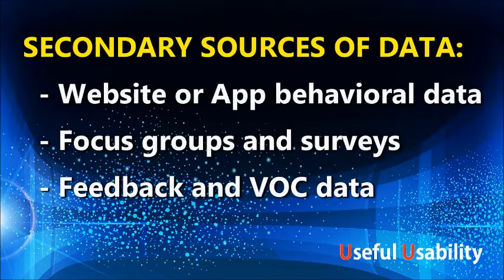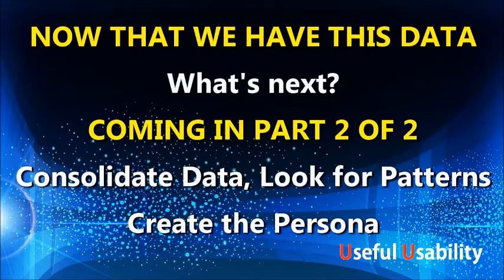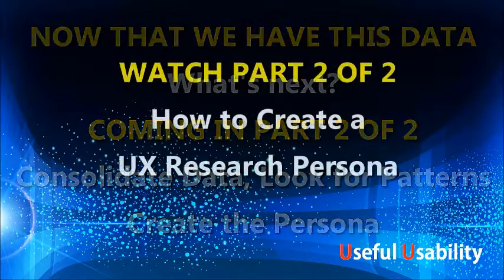The third secondary source is feedback and voice of the customer data. This can be a great source of information about what users are going through and what their problems are — especially feedback tools on a website or e-commerce flow, where you can start seeing the commonality of experiences. Now, let's consider that we've captured all of this data. What's next? We want to consolidate this data and start looking for commonalities and patterns across the various people that we have observed.